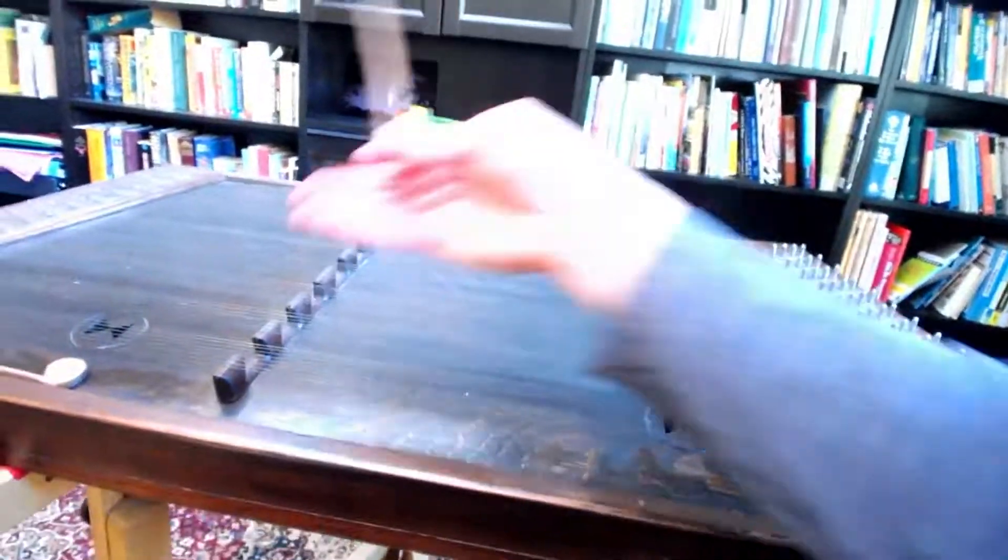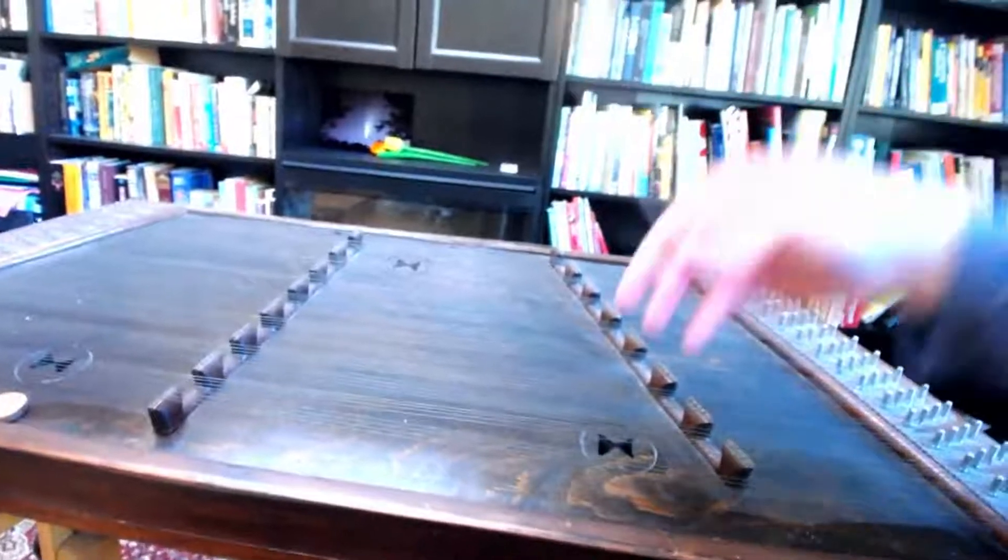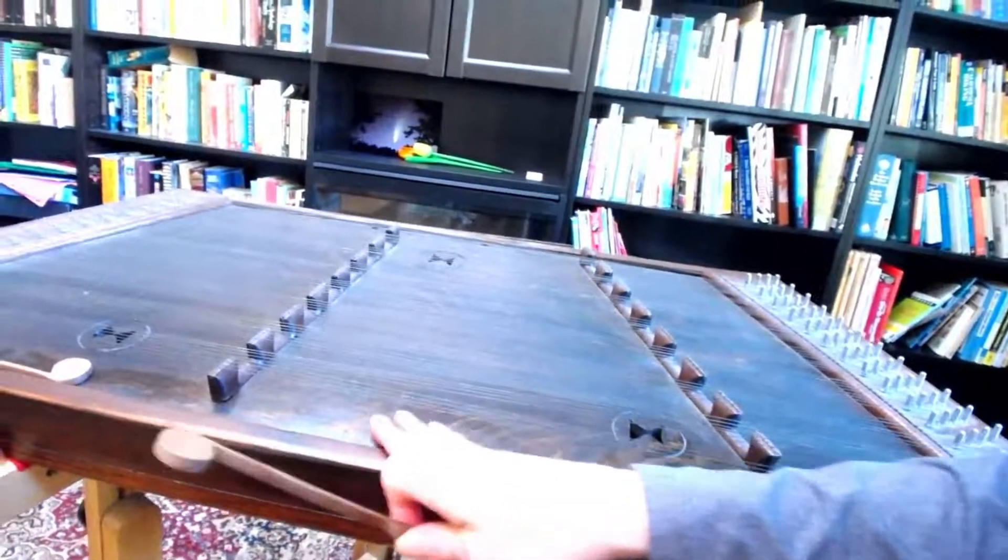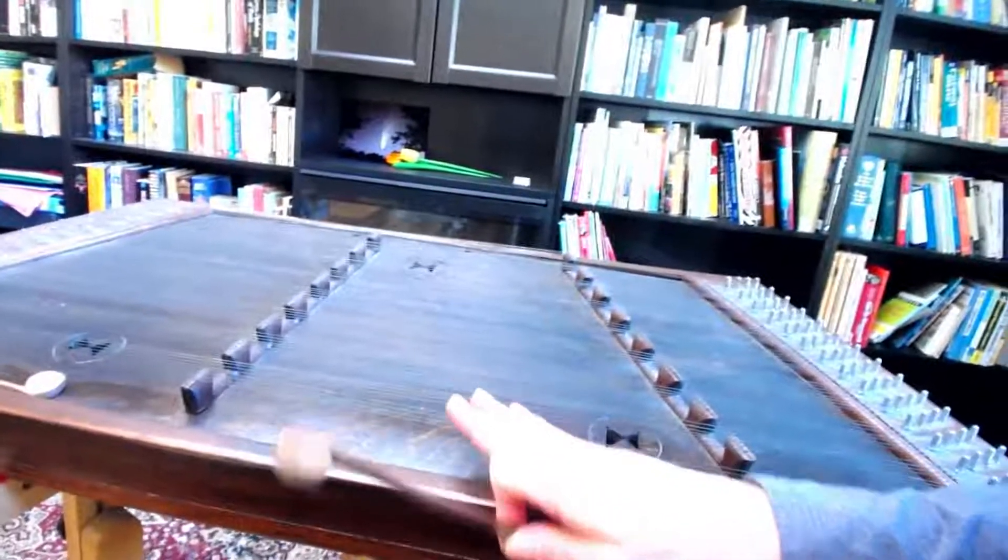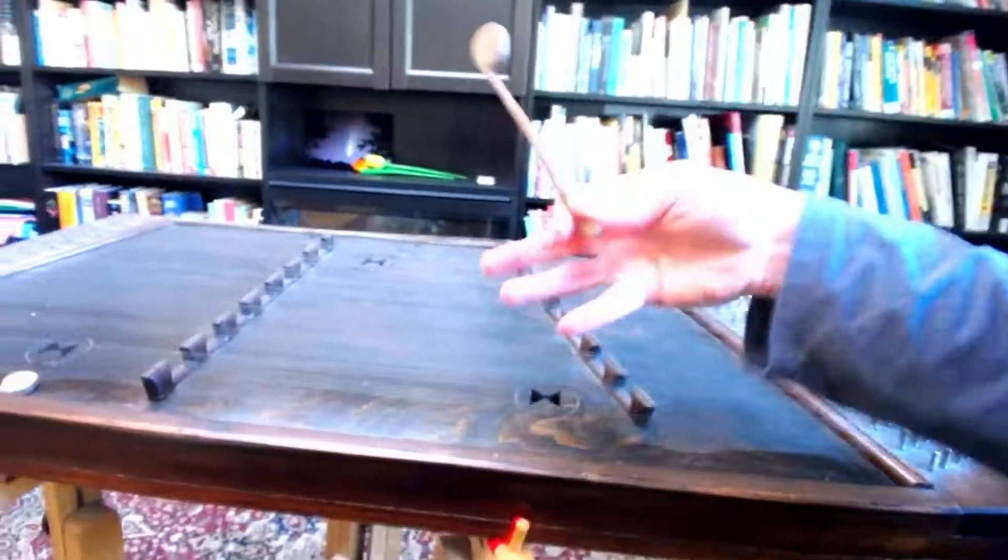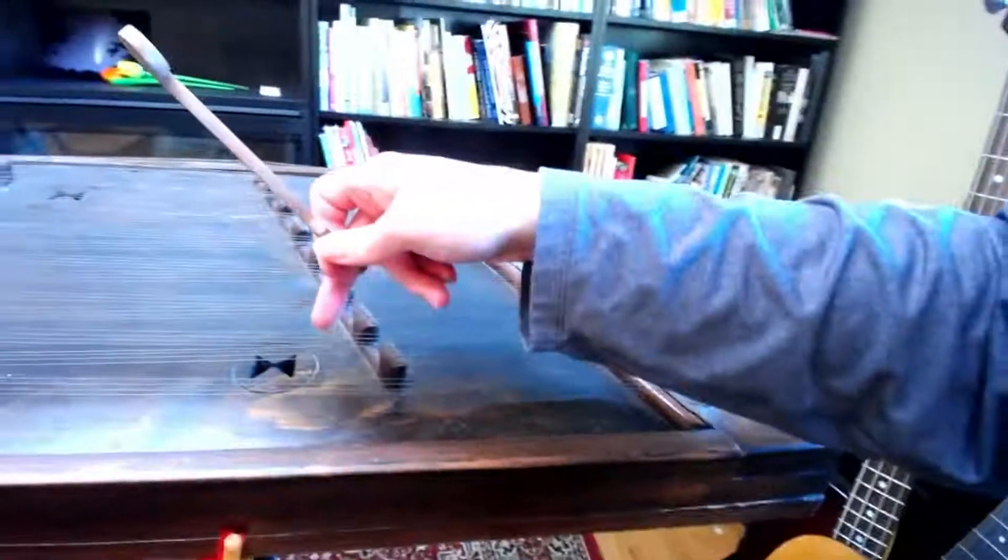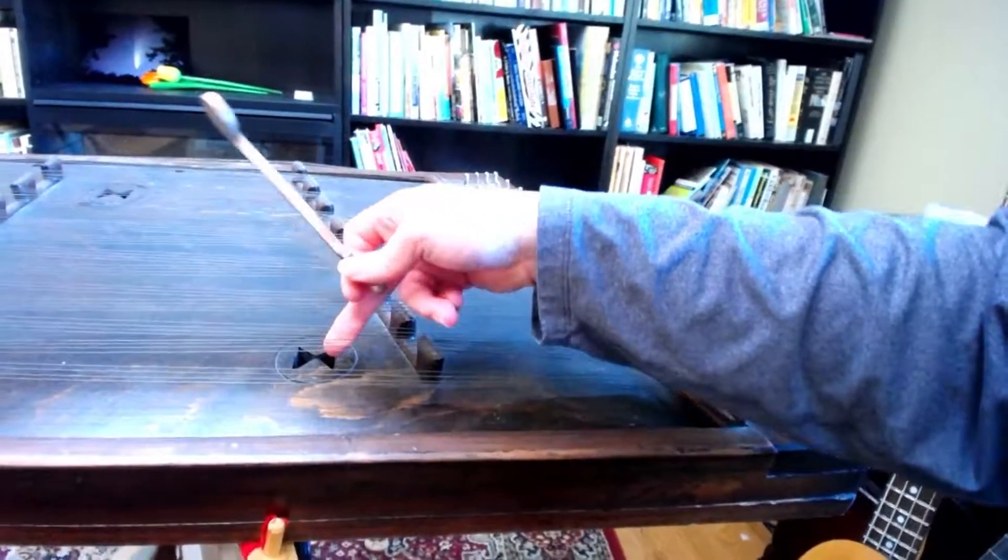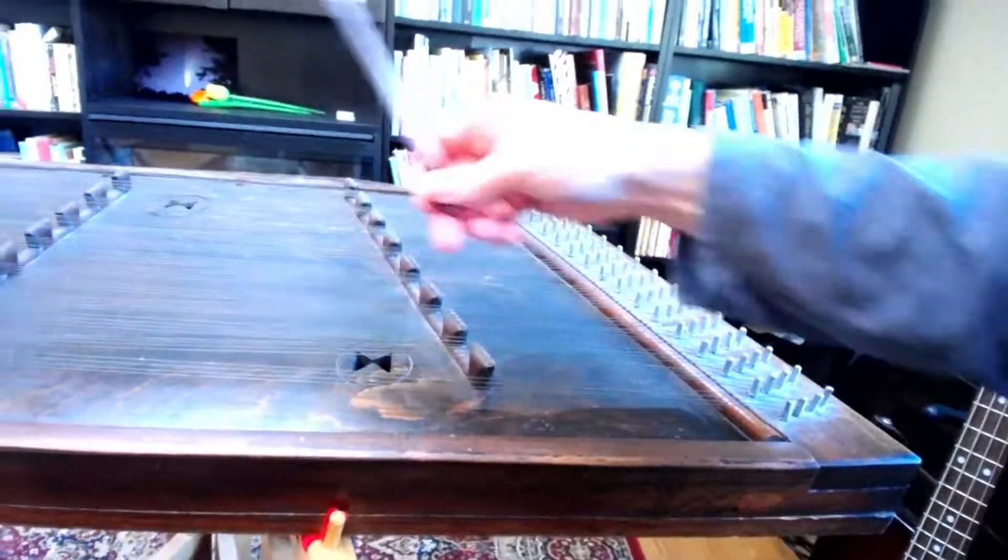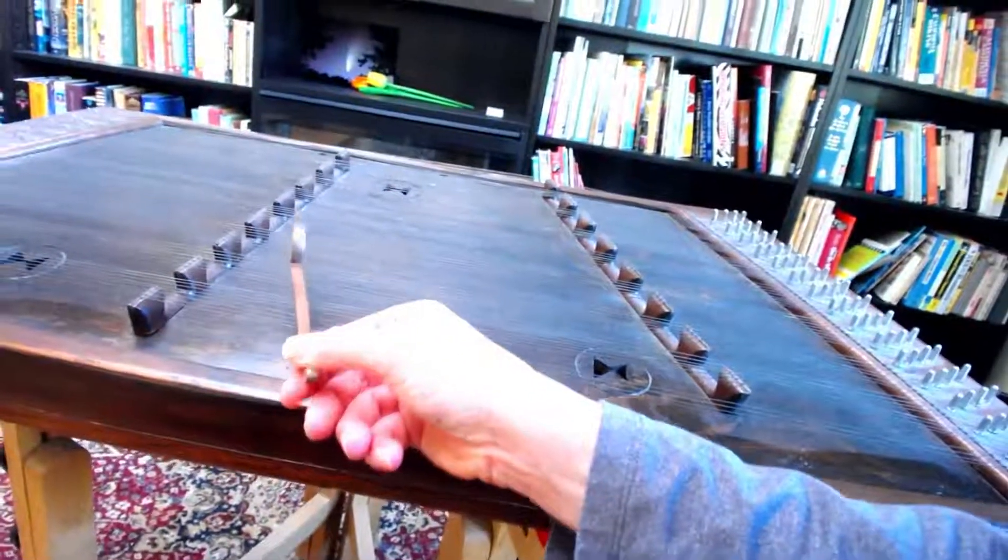And so the bridge then transfers the vibrations of the strings to the vibrations of this top plate, which we would call a sound board, but the instrument is also hollow. So there's vibrations of air inside the instrument that can transfer their vibrations to the surrounding air through these holes. And so this is quite a resonant instrument.